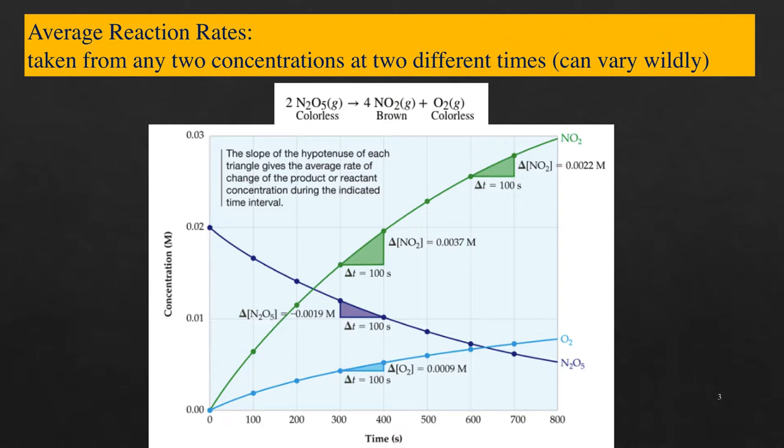To measure the average rate of a reaction, one chooses any two points during the reaction. For each of the two points, take the measure of the concentration of any reactant or product, and divide it by the difference in time between the two measurements. Here we see a graph of the concentration of the reactant and the two products in the decomposition reaction of dinitrogen hexoxide forming nitrogen dioxide and oxygen. The slope of the change in each is directly proportional to the coefficient in the balanced equation. The feature of interest in this graph is that the average rate changes depending on which two times you choose.